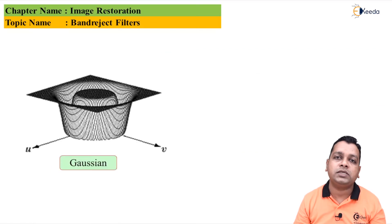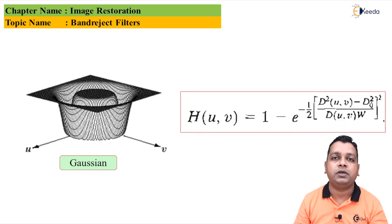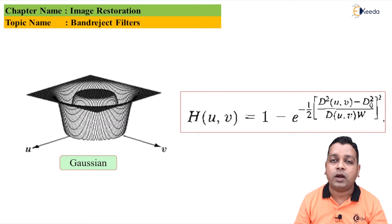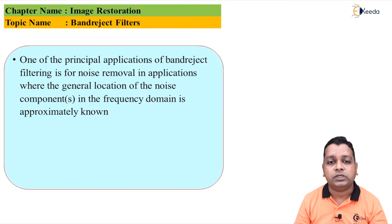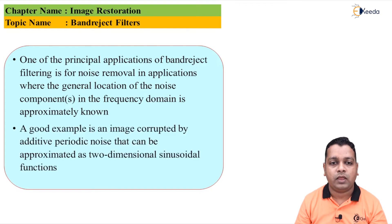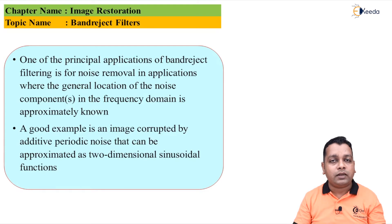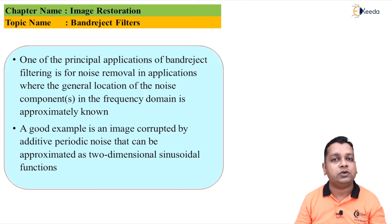Similarly, the Gaussian type filter can be represented for the band reject case: H(u, v) = 1 minus exp(−(1/2)·[(D²(u,v) − D₀²) / (D(u,v)·W)]²). One principal application of band reject filtering is noise removal when the general location of noise components in the frequency domain is approximately known — a good example is an image corrupted by additive periodic noise approximated as two-dimensional sinusoidal functions.